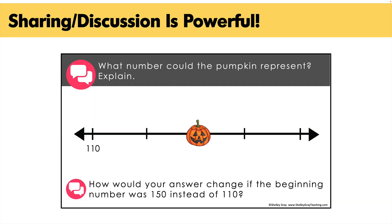The sharing and discussing aspect is extremely powerful because students are not only working with their own strategy or their own ideas, but they are listening to and reflecting on other people's strategies as well. Just think of all the different answers we could be considering for a slide like this. While one student might think the pumpkin represents 112 — maybe they're thinking about counting by ones — another could use decimals or fractions. Maybe that pumpkin represents 111 because every point on the number line is 0.5 or one half. Maybe we're counting by 100, so the pumpkin represents 310. There are so many different ways to think about this.